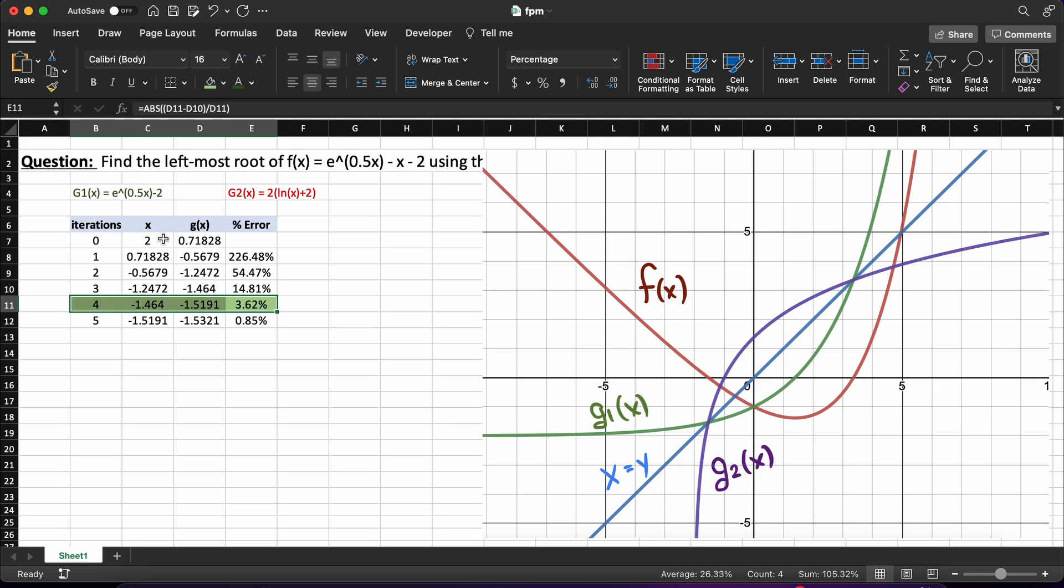I just want to note that our initial guess in the fixed point iteration method is very, very important. So, for example, if we chose a starting guess of say 4, you can see that our algorithm diverges and our error is growing. Therefore, we will never converge to a solution.